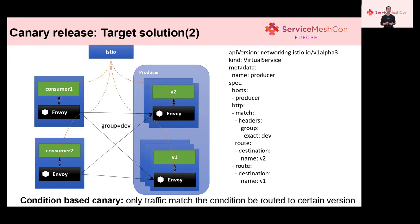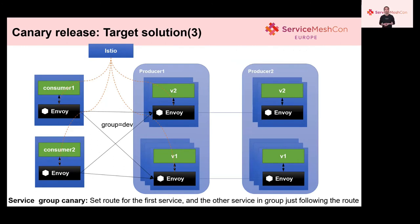Besides providing weighted policy, Service Mesh can control so that only traffic matching a condition is routed to a certain version. The condition is related to protocol. For HTTP, the condition can be HTTP header, path, source IP, and so on. This manifest routes requests with a DEV group header to version 2, and the others still go to the default version 1. For the target solution, Service Mesh can do a canary release for a group of services, routing the first service and the other services in the group following the same route. Mixed traffic from version 1 is sent to version 1, and from version 2 is sent to version 2.